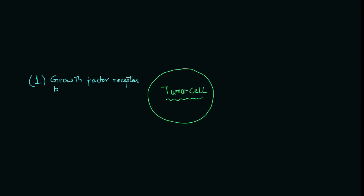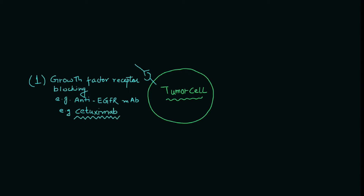The first antibody functions to inhibit or block the growth factor receptor. By blocking the growth factor receptor — as you can see here, the antibody is trying to block this particular receptor — it can block the growth of the tumor cell. The example for that is cetuximab, an anti-EGFR monoclonal antibody.